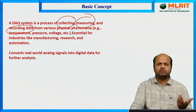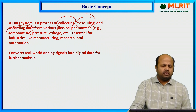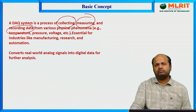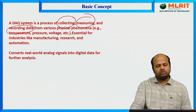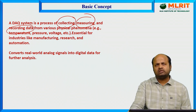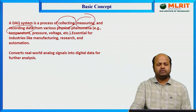We can measure the data by some measuring devices like a voltmeter and other instruments. Recording the data — finally we can store the data in some memory card. So a data acquisition system basically consists of three things: collection of data, measurement of data, and recording of data.